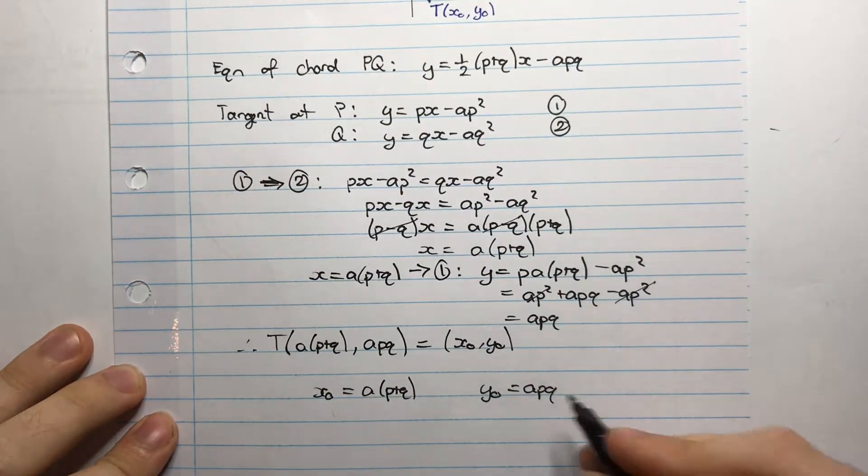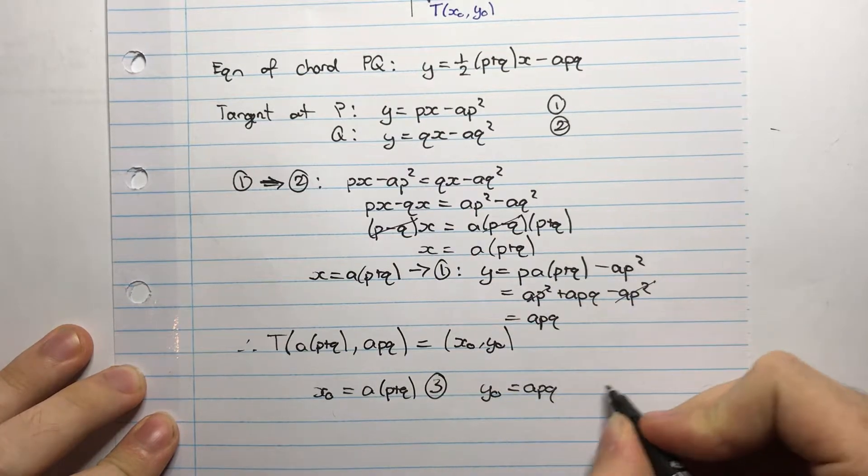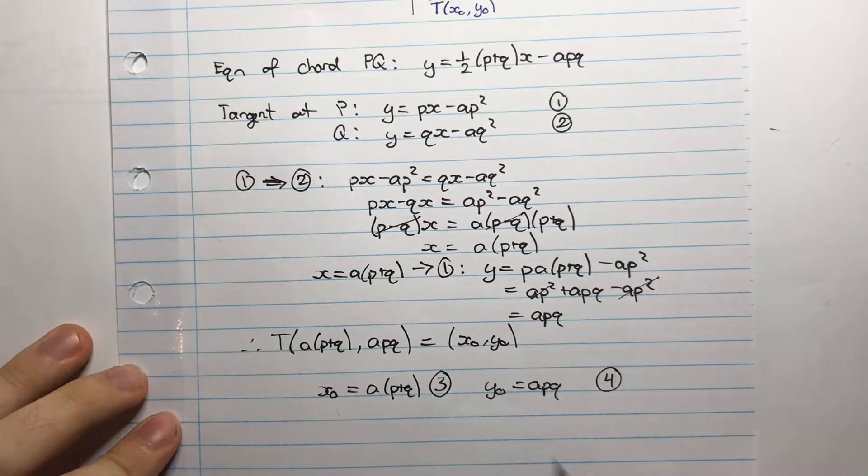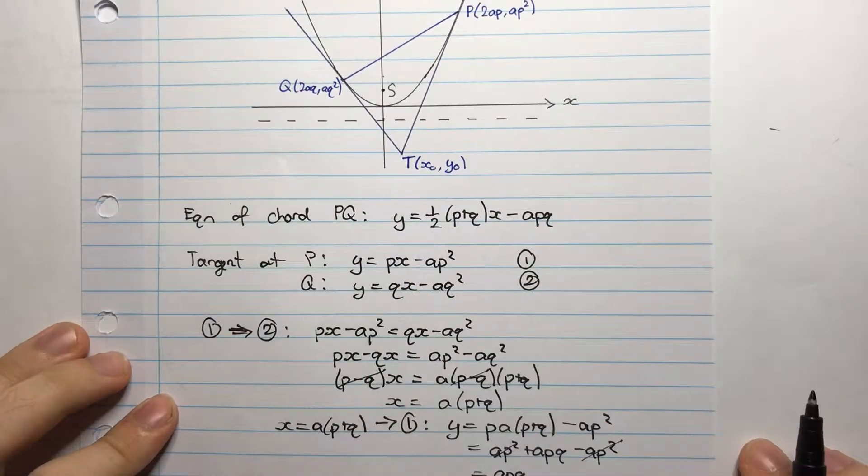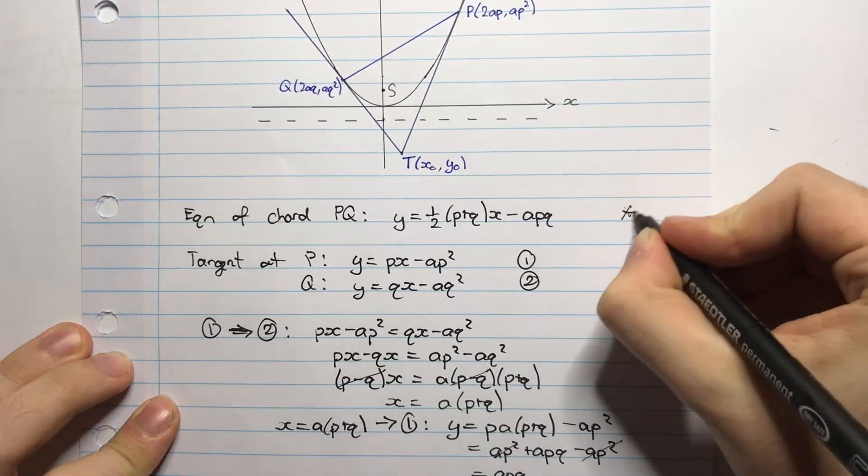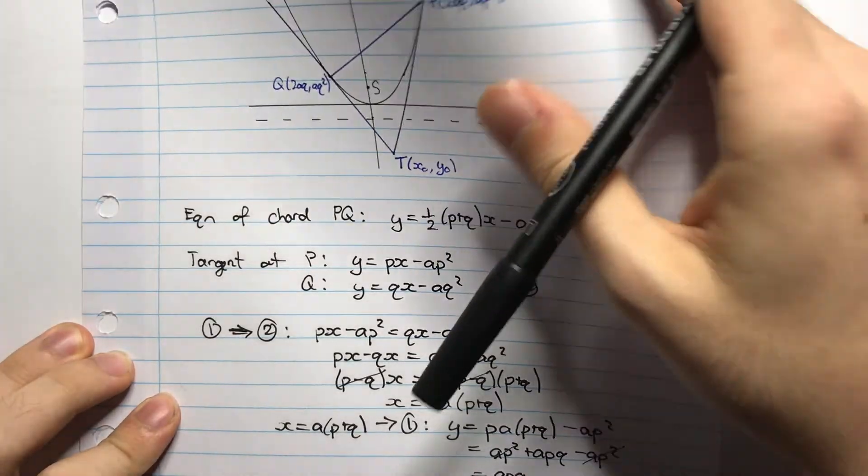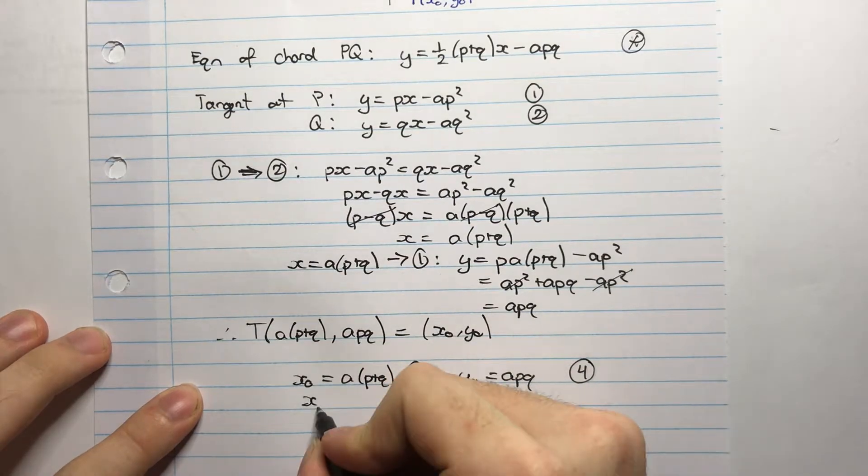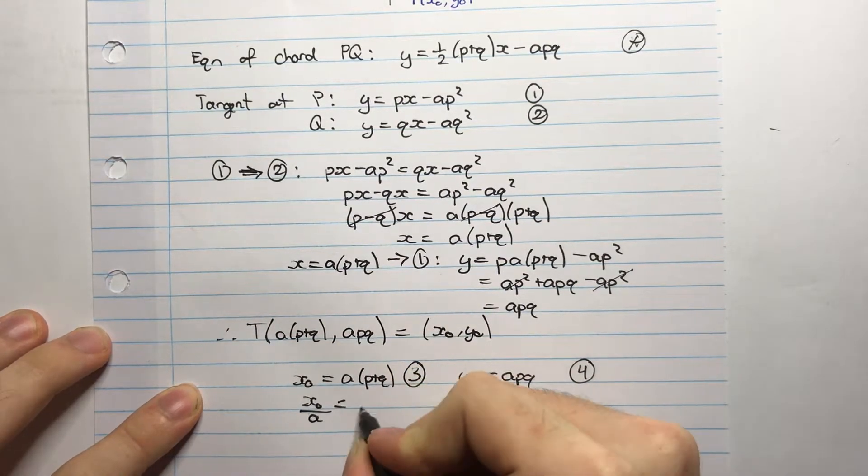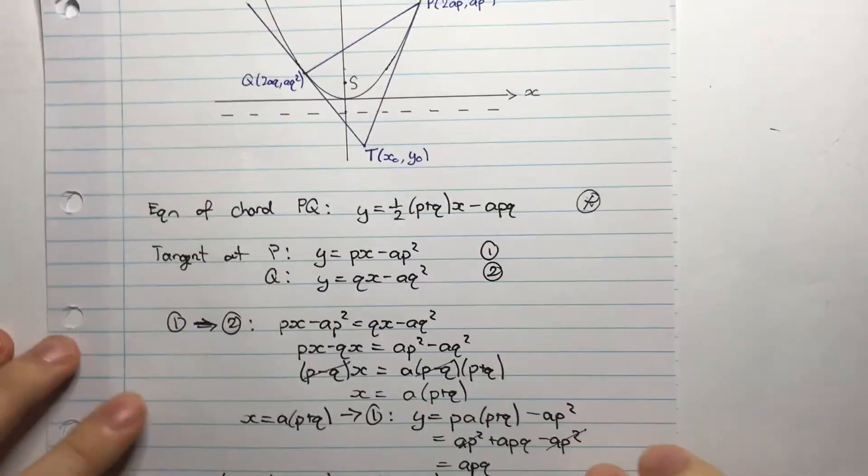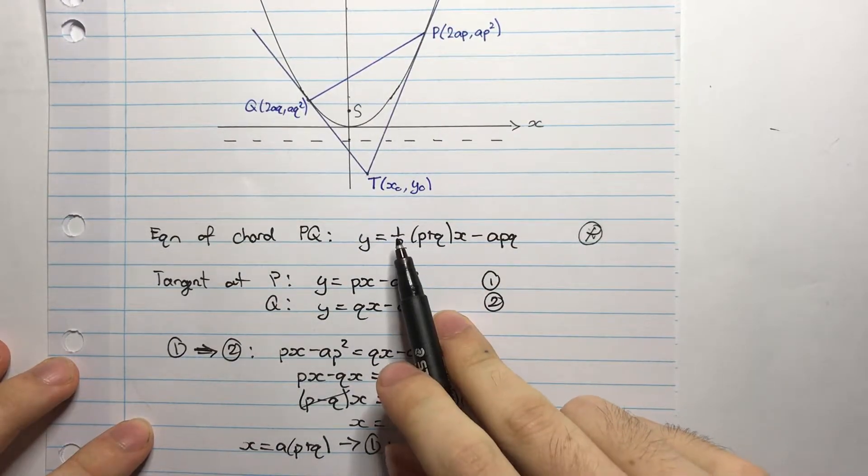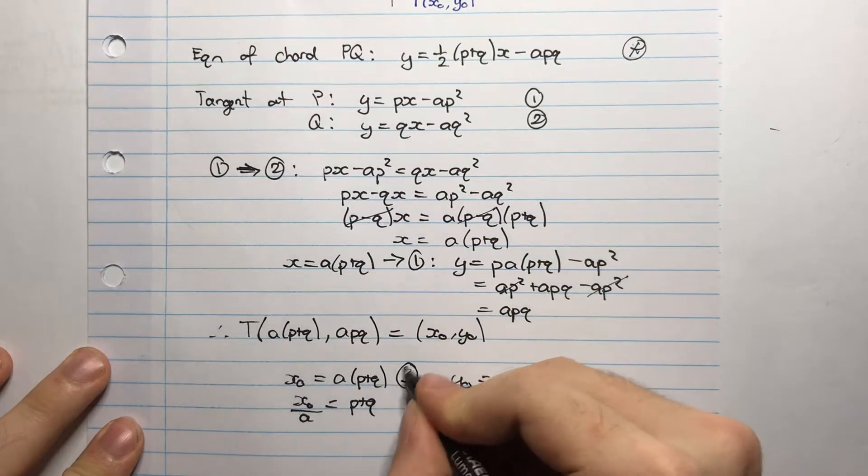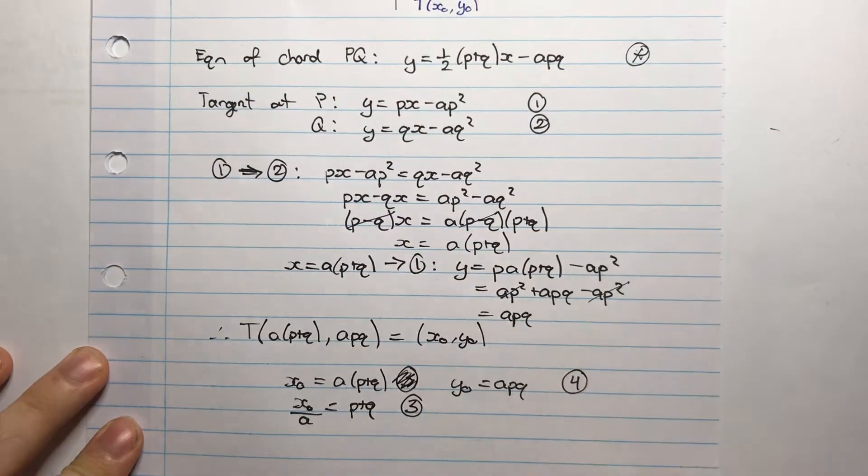So let's call this equation three and four. All right, so I want to substitute three and four back into the equation of a chord PQ. And the reason I'm going to divide by A is because I can see a P plus Q, but it doesn't have the A. And here, if I divide by A, then I'll have that P plus Q. So perhaps I'll call this equation three.